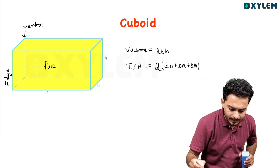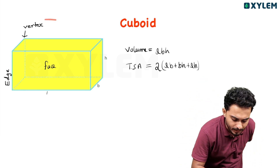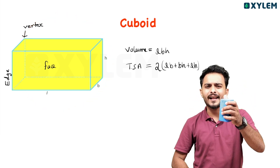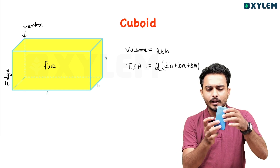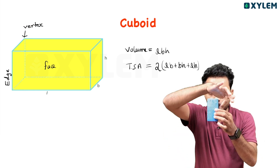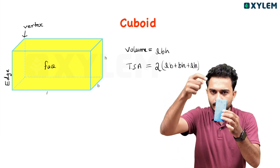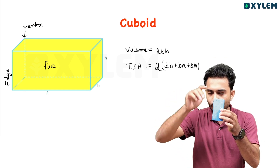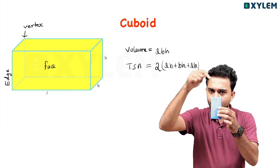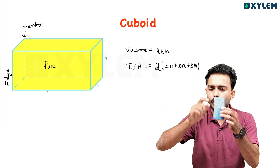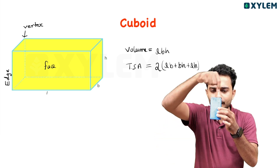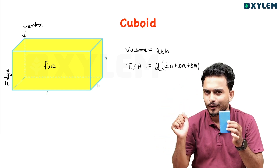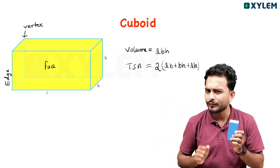I'm looking at this figure. The faces are numbered: 1, its opposite 2, 3, its opposite 4. How many faces total? 1, 2, 3, 4, 5, 6 — 6 faces total.